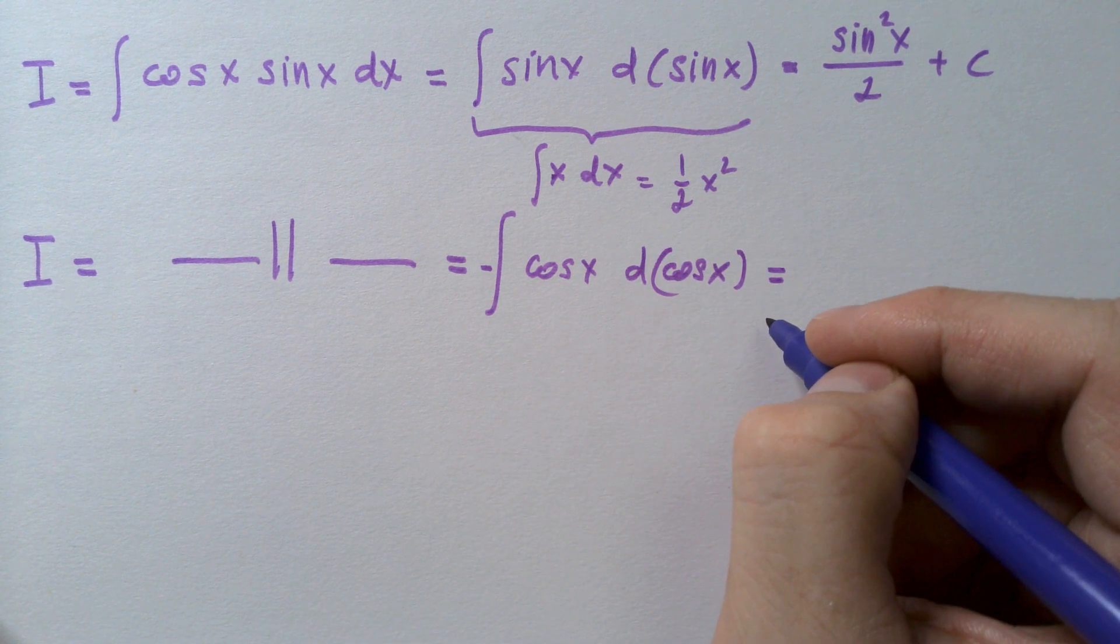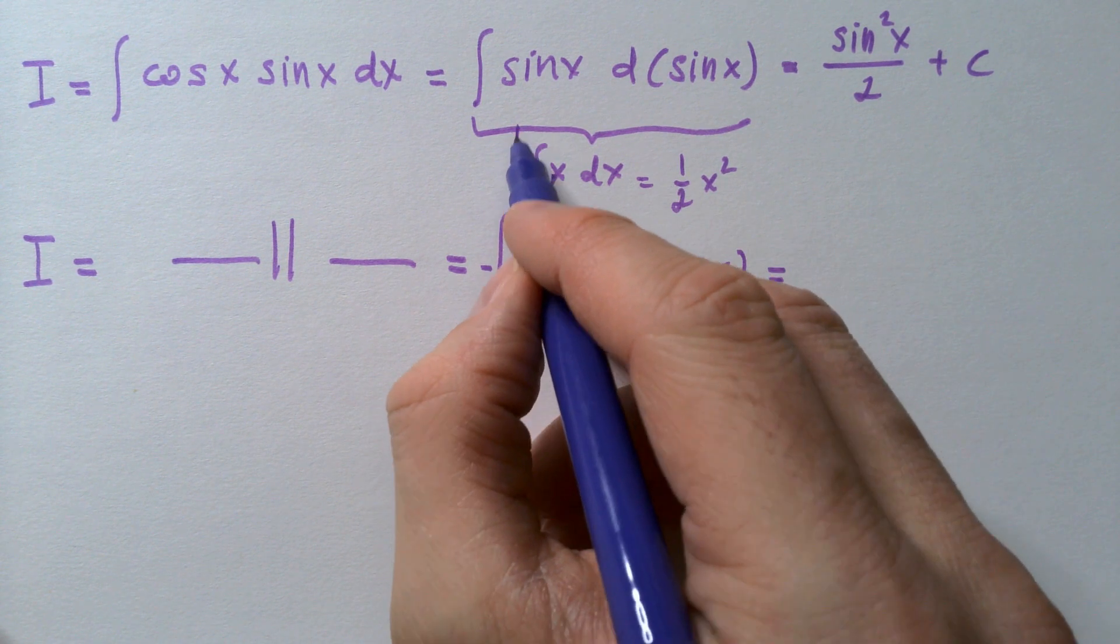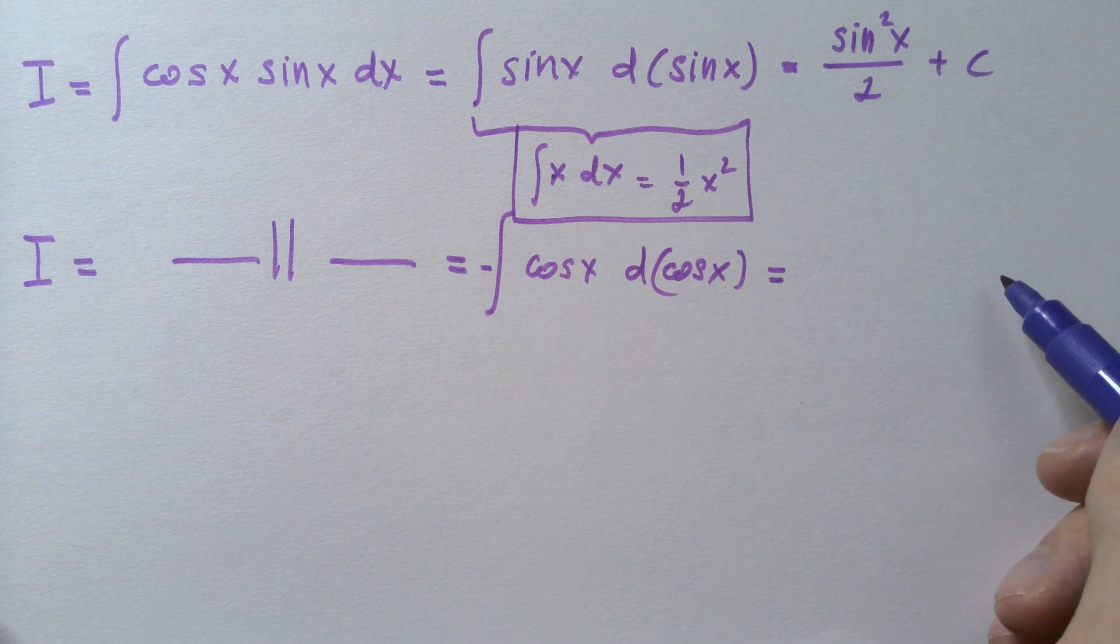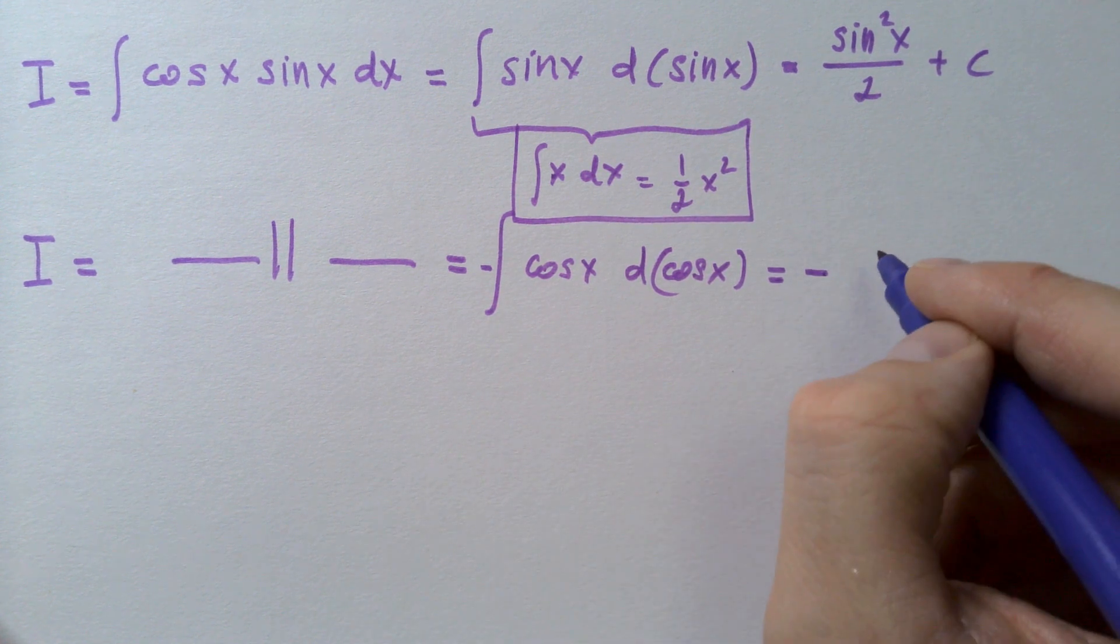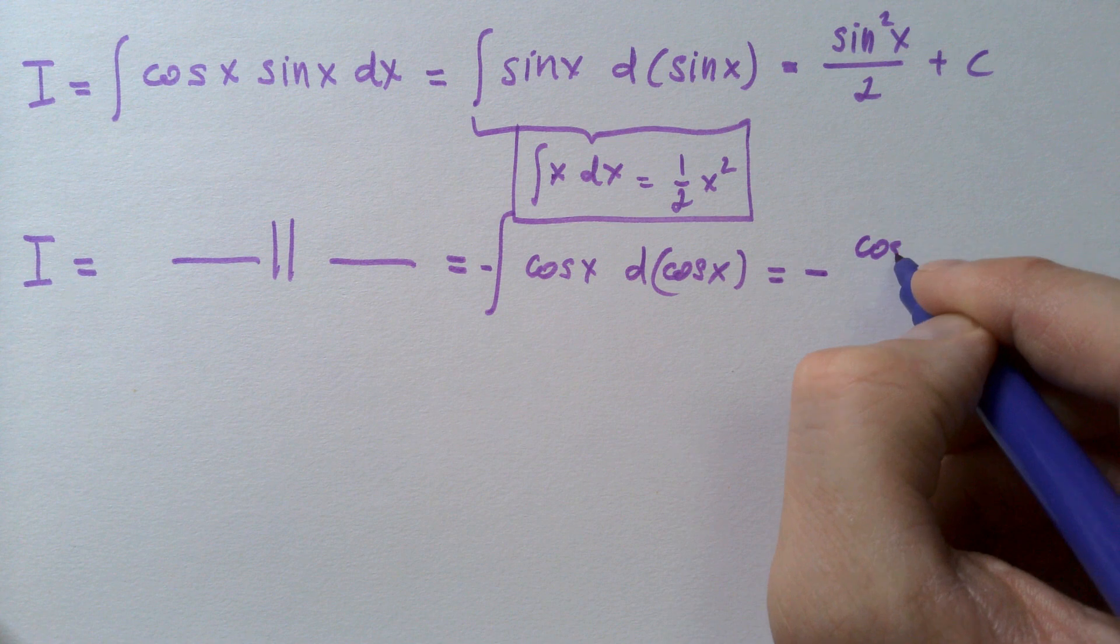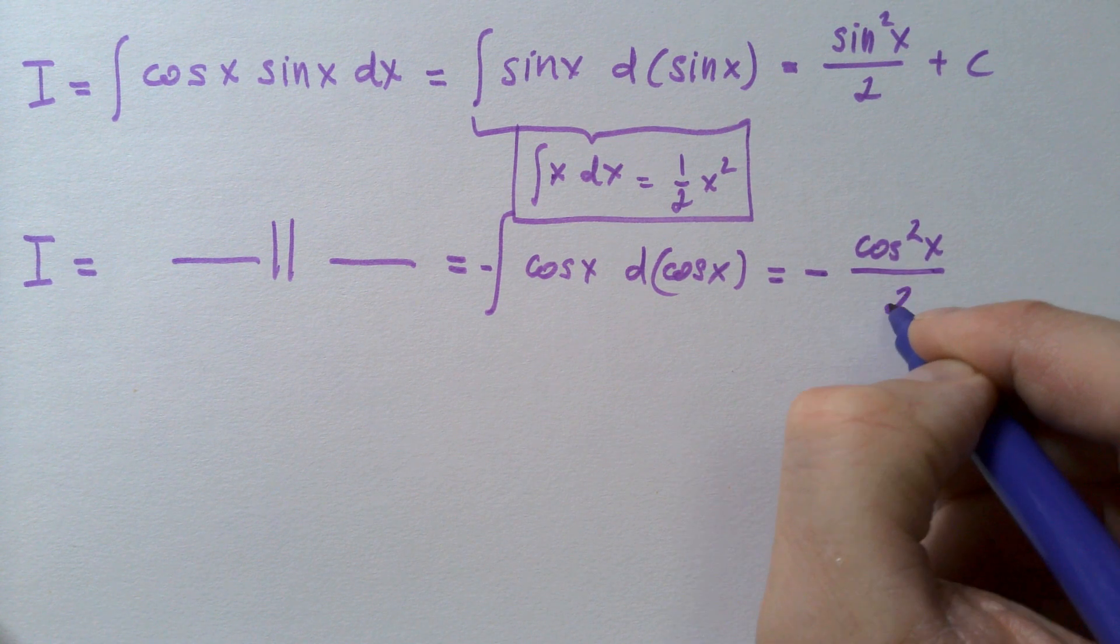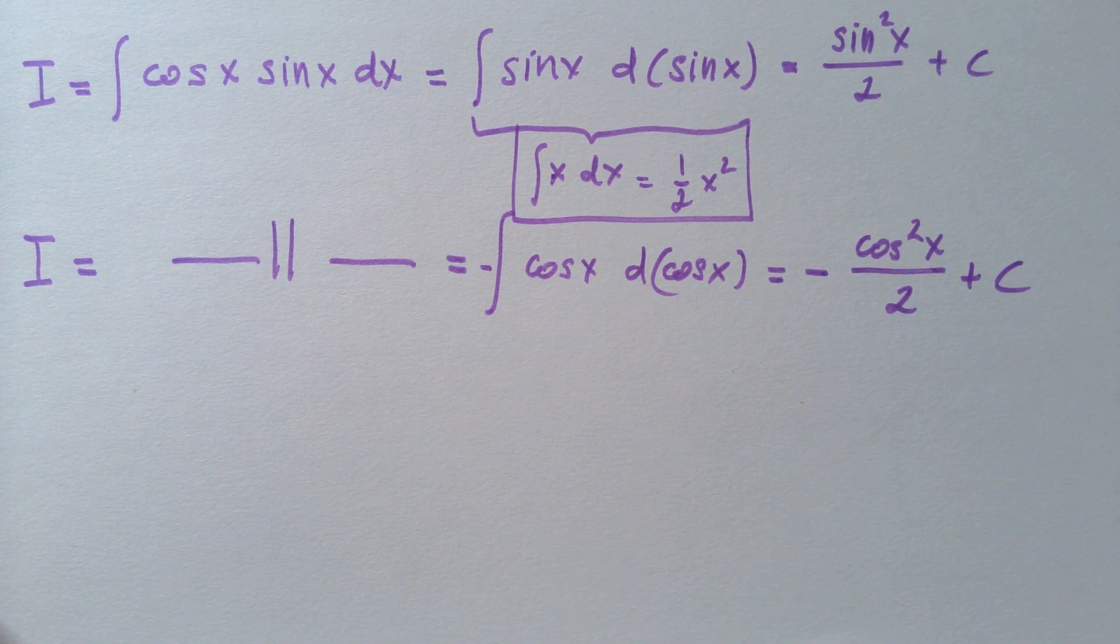In which case, I once again have this pattern over here, and that gives me negative cosine squared x over 2 plus integration constant.